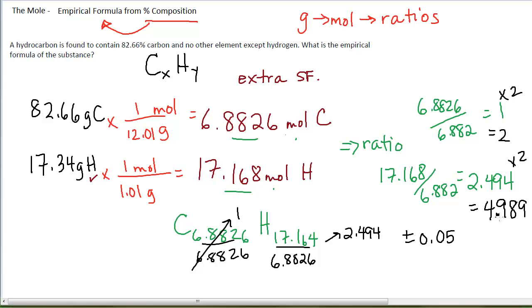And I have the whole number 2. And then 4.98 is indeed within 0.05 of the whole number 5. And so my correct answer is C2H5 for my empirical formula.